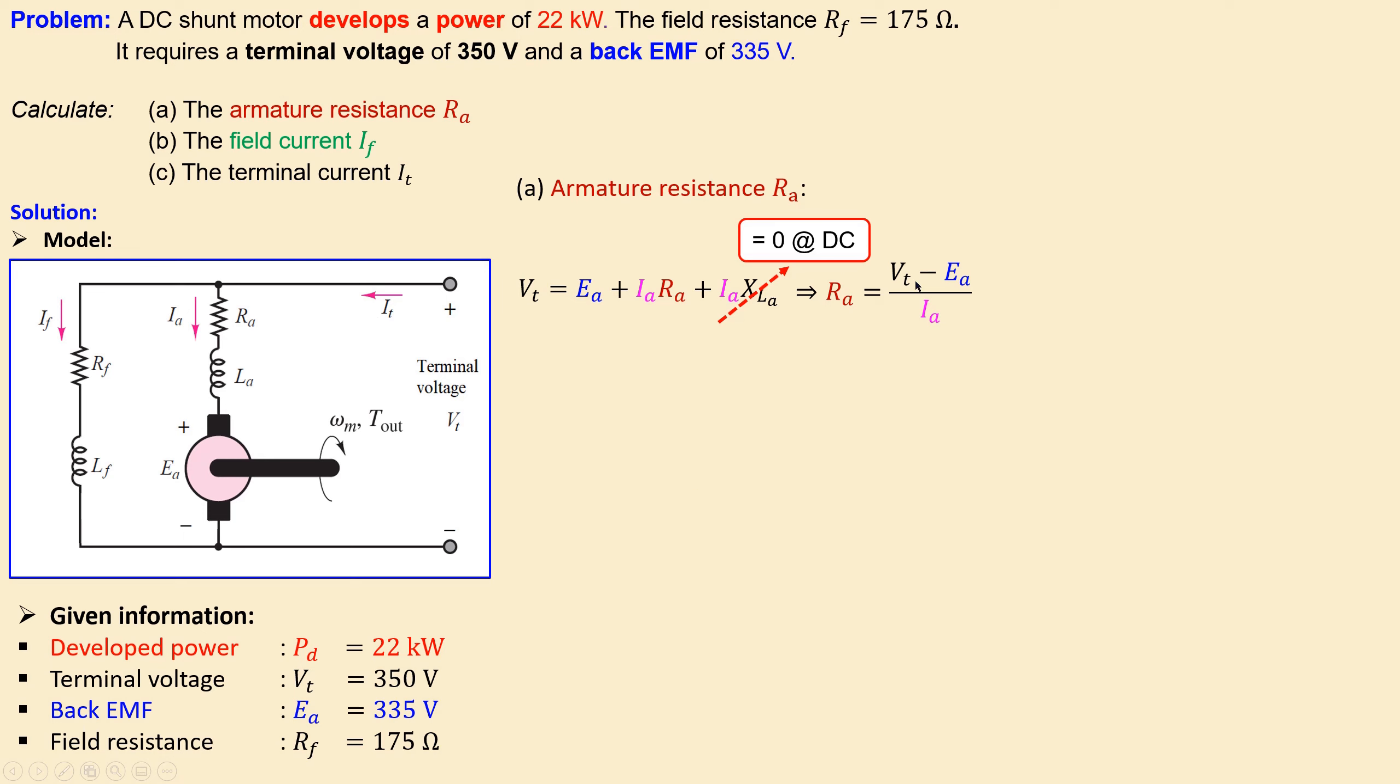Now what you need here is the terminal voltage, the back EMF, but also the armature current. Now these two we have from the given information, but we don't know this yet. So we need another formula to calculate the armature resistance.